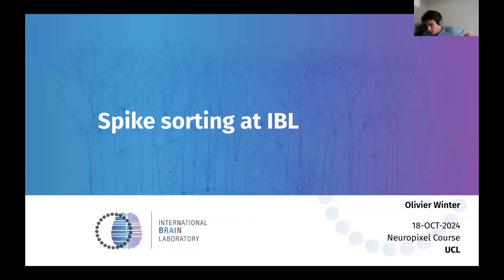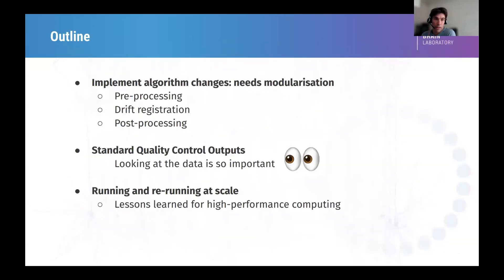So the spike sorting at IBL, I'm going to explain a bit why, little by little, we changed a few things until we changed so many things that we decided to call it a different sorter. So why did we change things? First, we needed modularization, and this is something that spike interface really captures well, is the fact that there is no reason why preprocessing couldn't be swapped with a different drift registration engine, for example.